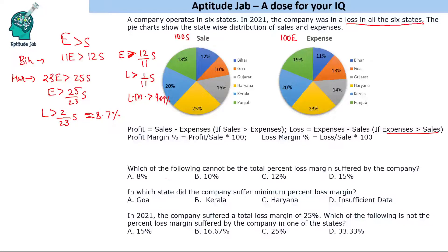Looking at the answer options, all options except 8% are higher than 8.7 percent. So we cannot have 8 percent as the loss margin. The minimum loss margin is in Haryana at about 8.7%, and the highest loss margin is in Goa — from the pie chart you can see 10% sales and 30% expenses.